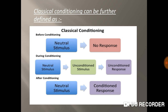Classical conditioning can be divided into three stages: before conditioning, during conditioning, and after conditioning. Before conditioning, a neutral stimulus is given with no response from the receiver. During conditioning, the neutral stimulus and unconditioned stimulus are both presented to the receiver. After conditioning, we are able to achieve our desired target response from the receiver, whether that is a client or a student.